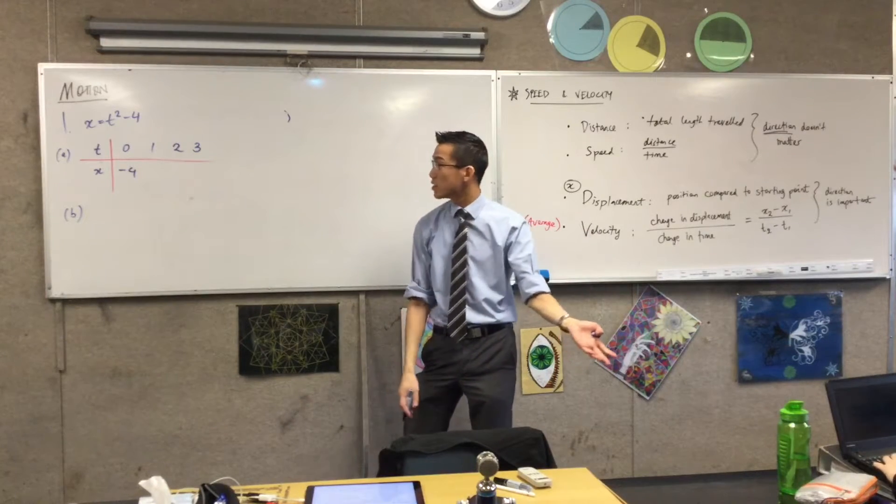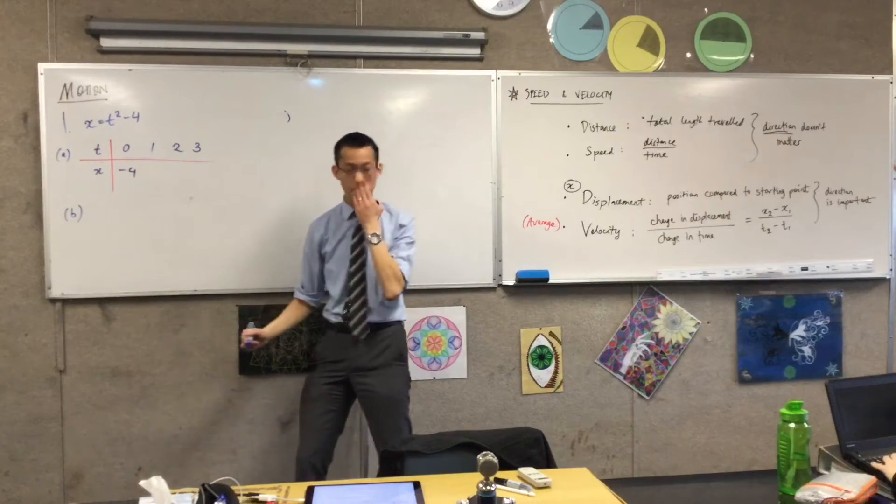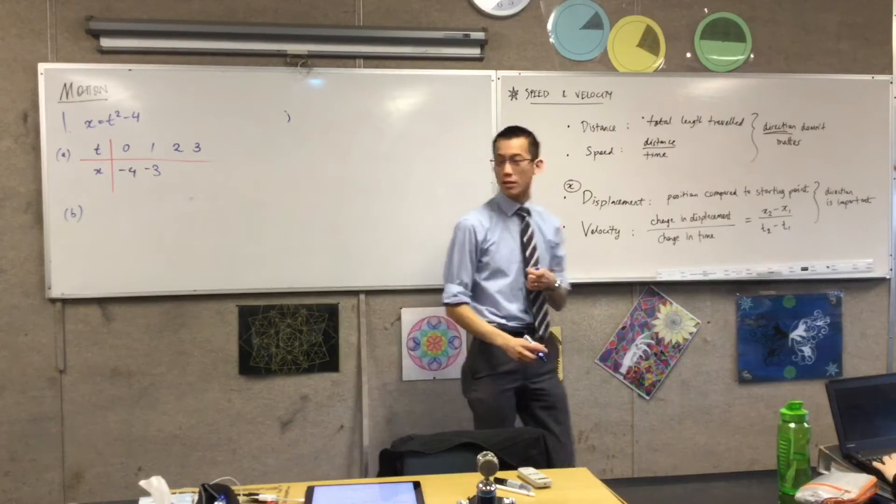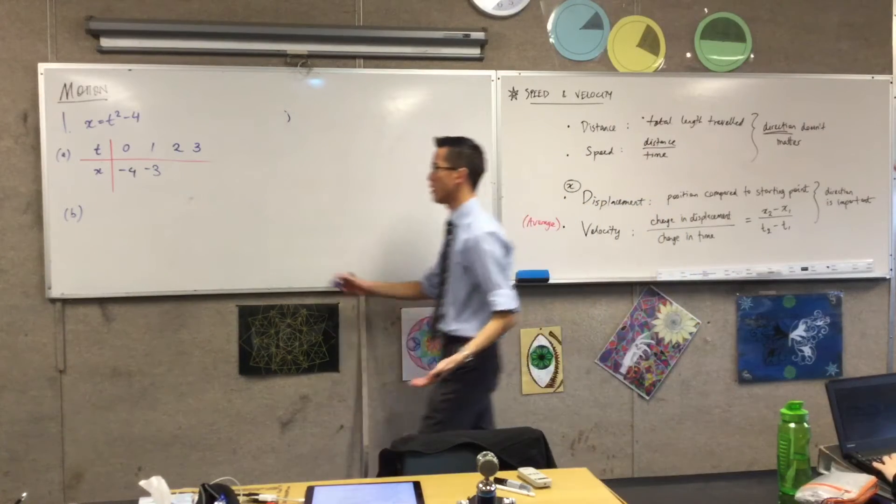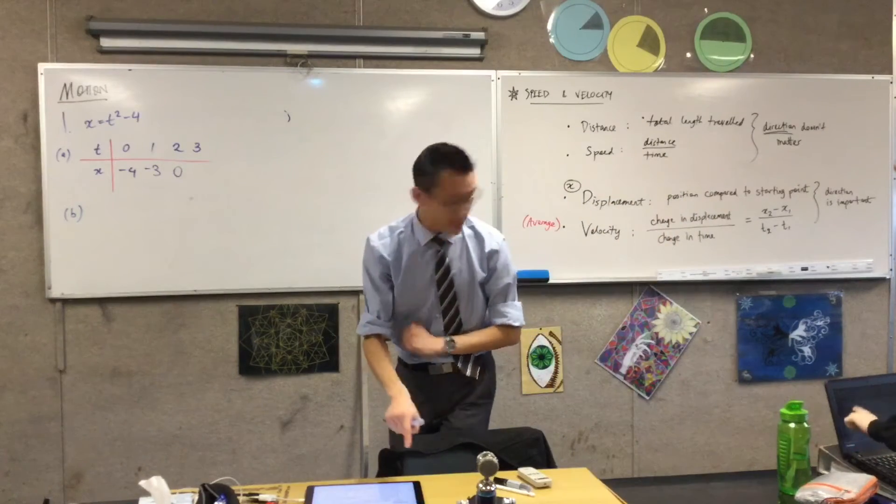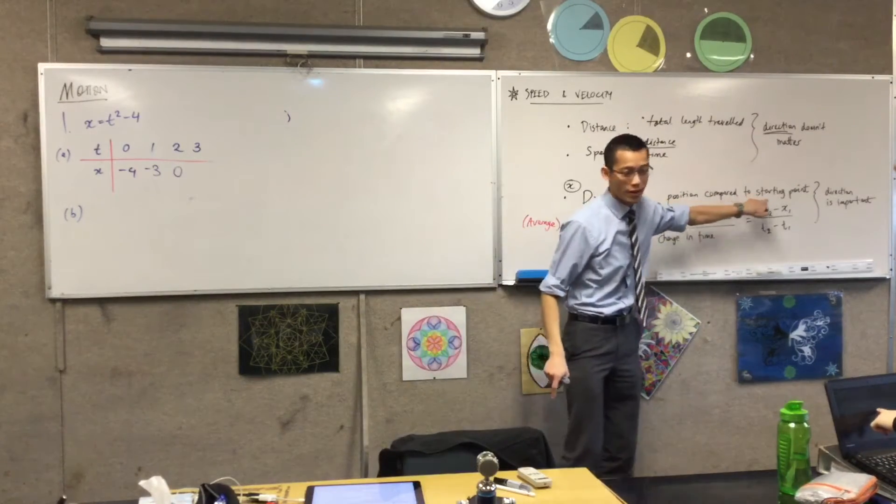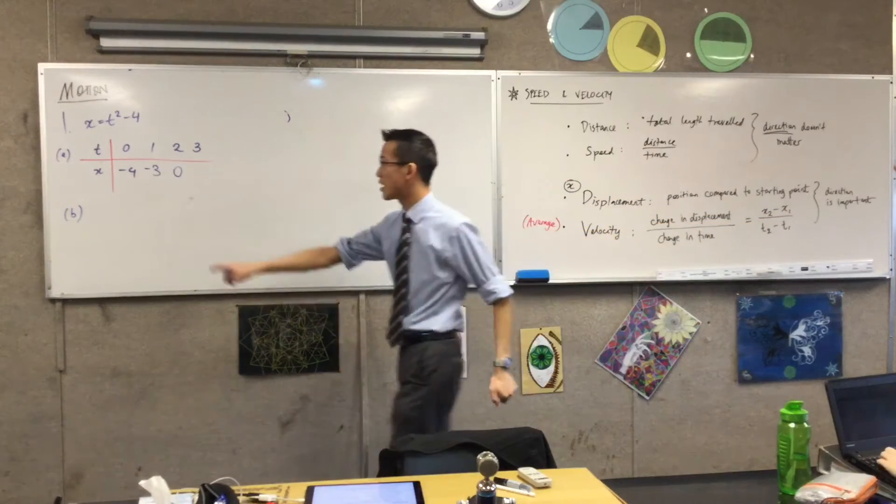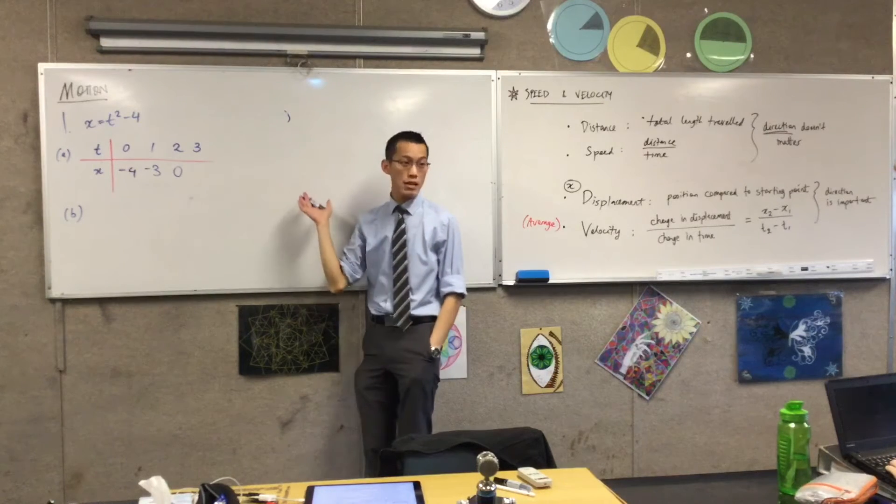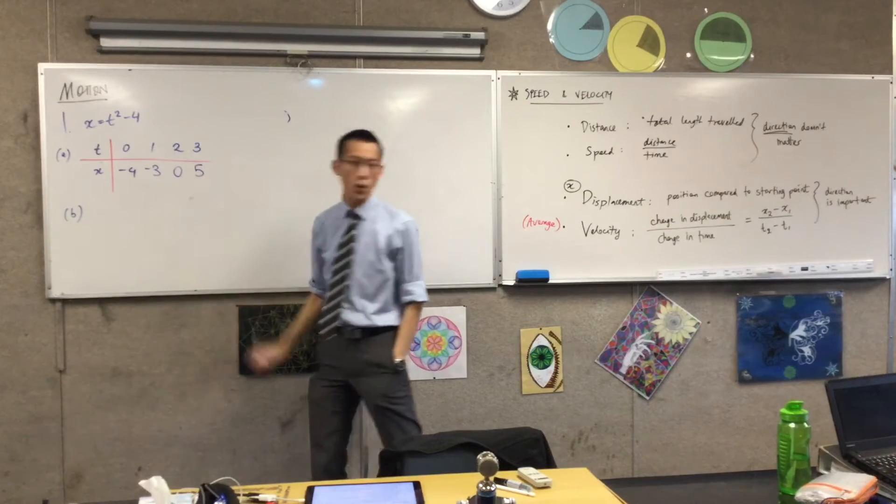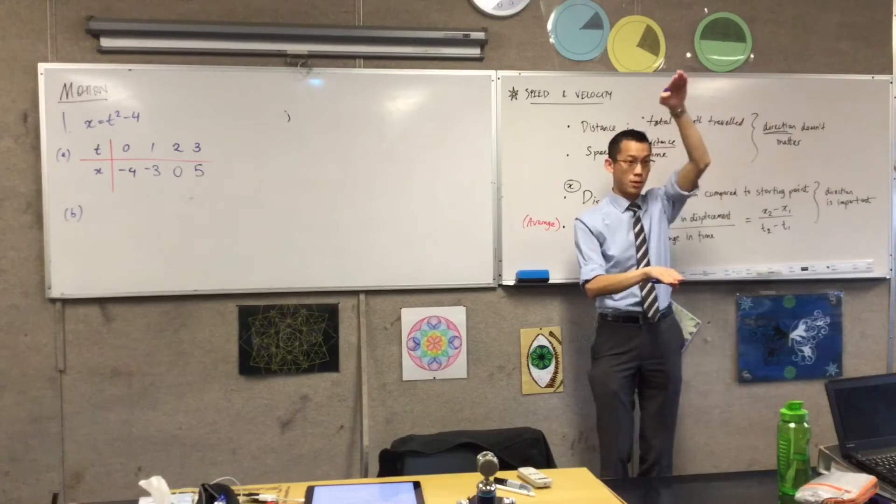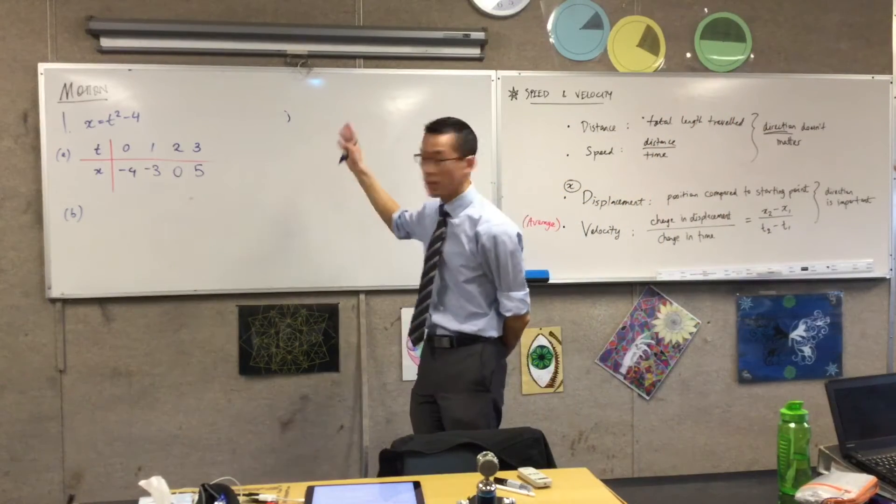At time one, one minus four, that's going to be negative three. At time two when you substitute that in? Two squared minus four is zero. So at this point after two seconds I pass the origin, right, because it says there I'm relative, my starting point is relative to the origin. So I started negative four units on the negative, four units on the negative side, and now I'm at the origin. Time three? Five. Very good. So I blow straight past the origin from the negative side to the positive side.